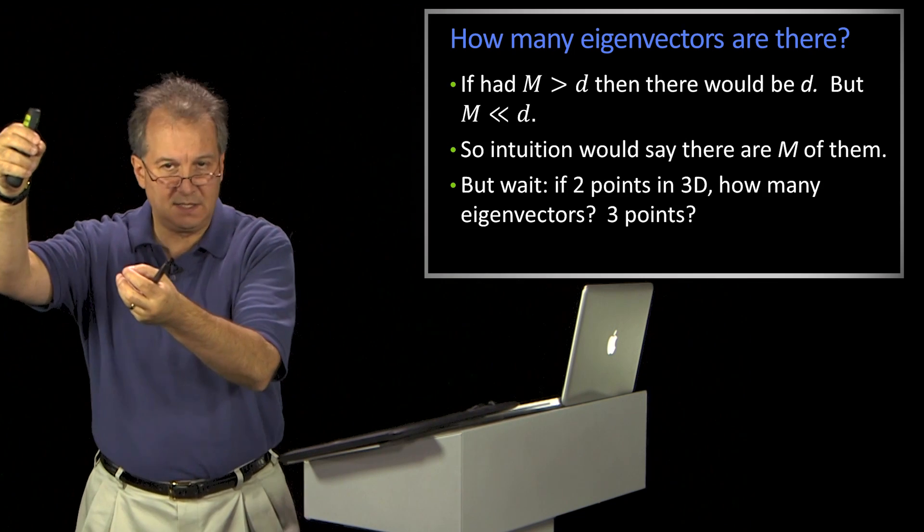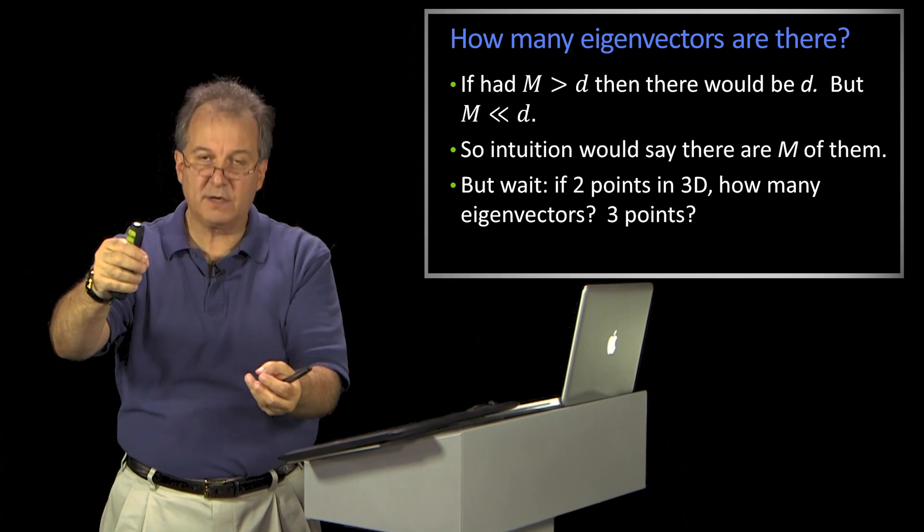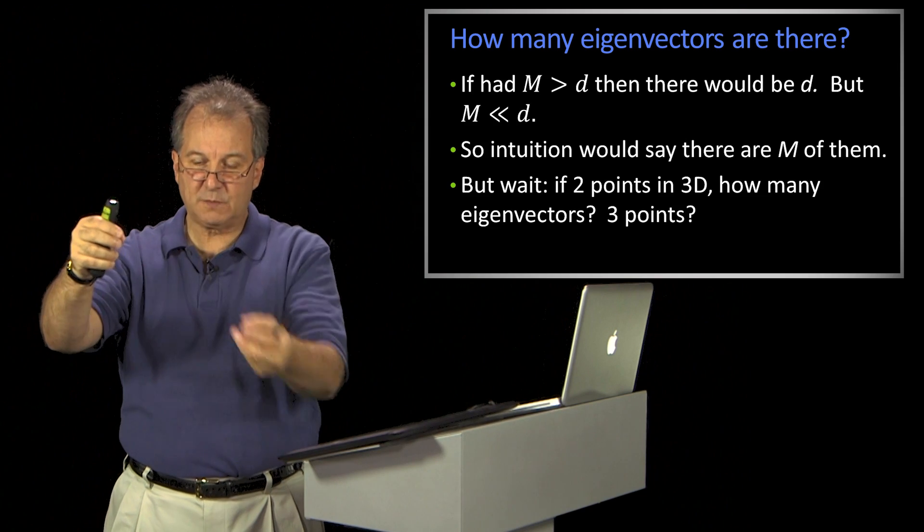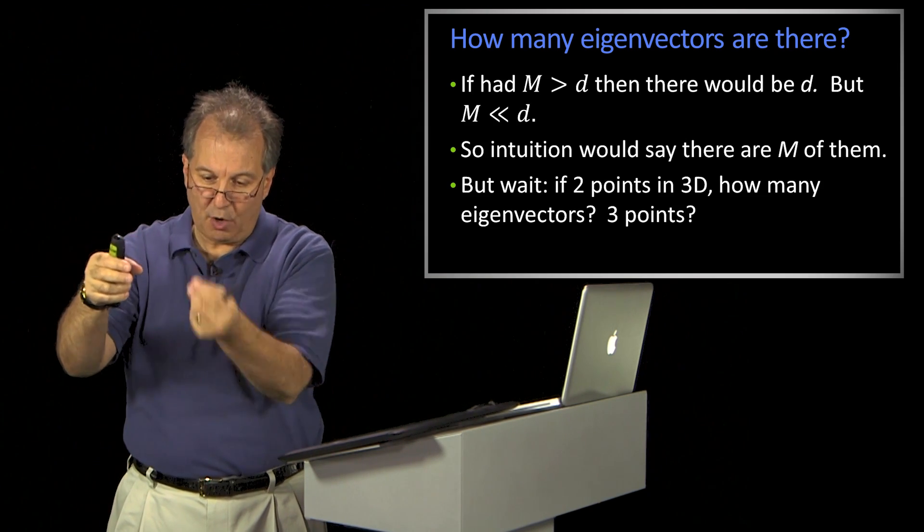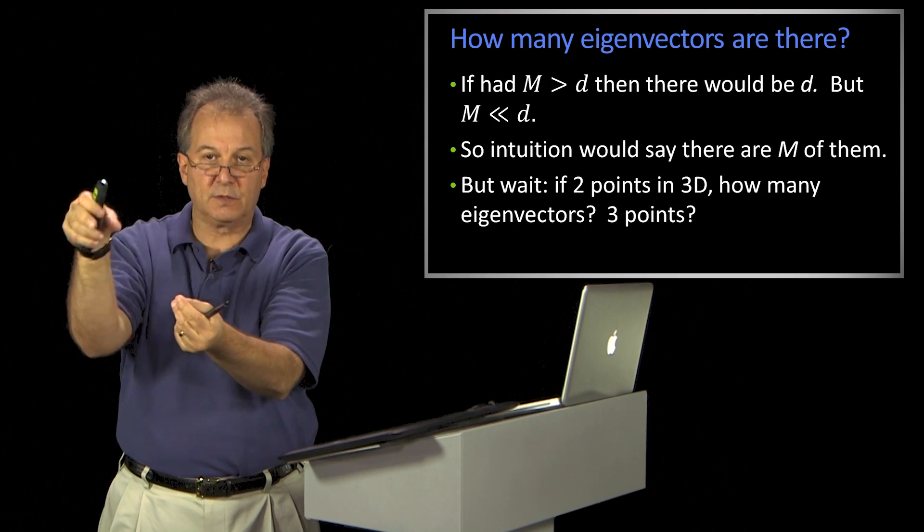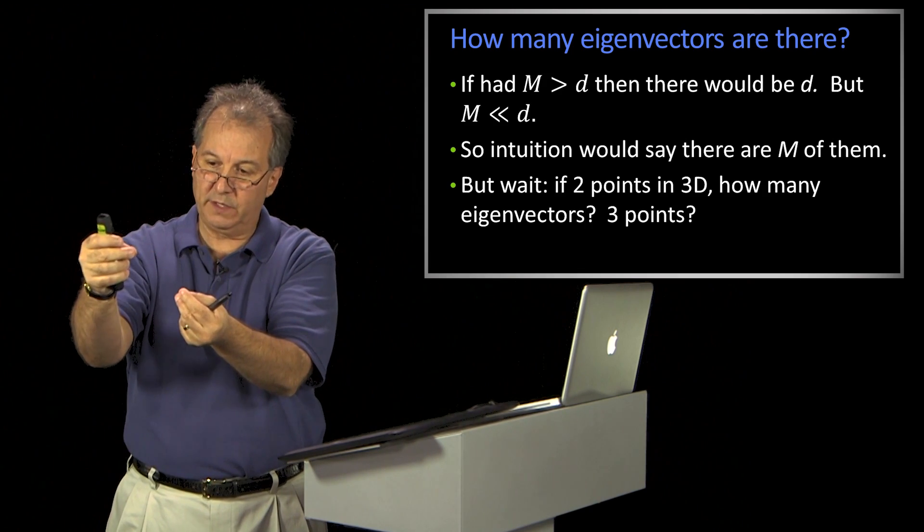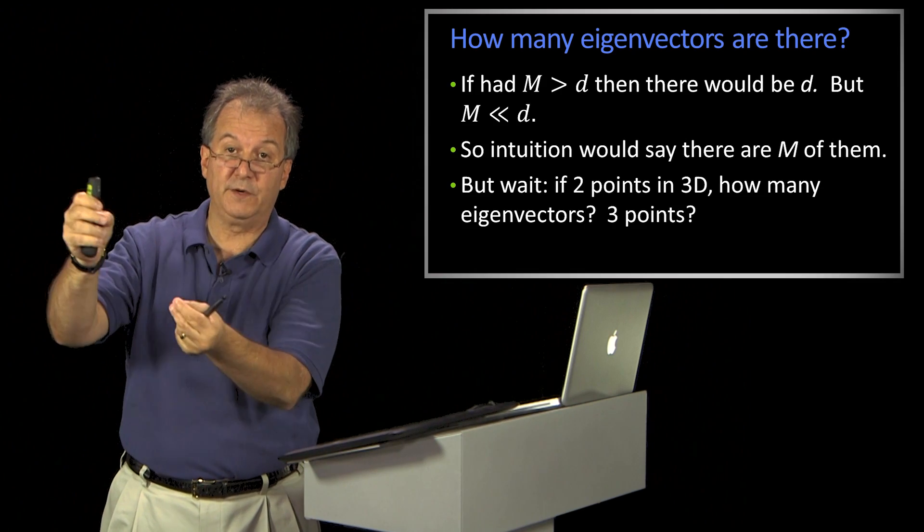And the reason is, I have to think about subtracting off the mean. And once I subtract off the mean, actually, I only have one degree of freedom, right? Because the origin is going to be halfway between those two points. So once you tell me where one of the points is, I know where the other one is. So there's only one degree of freedom.